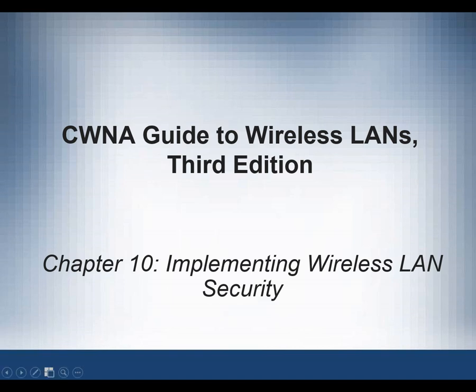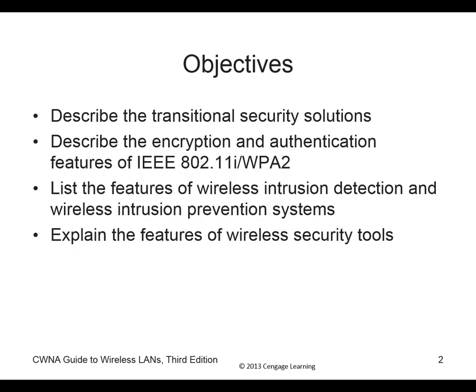We're going to cover chapters 10 and 11 tonight. For chapter 10, we're going to talk about transitional security solutions, 802.11i and WPA2, and a little bit about IPS and IDS — the wireless versions.